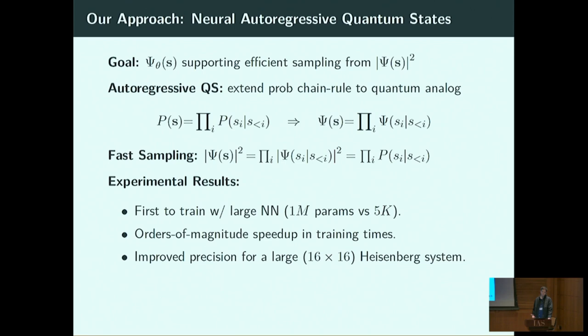Based on the probabilistic chain rule, we found a quantum analog to the chain rule, yielding a neural autoregressive quantum state approximation that allows both efficient approximation of the wave function and efficient sampling. Empirically this allowed us to be the first to train with very large neural networks with millions of parameters — compared to just a few thousand possible a year ago — achieving an order-of-magnitude speedup in training time and better precision for large quantum systems.